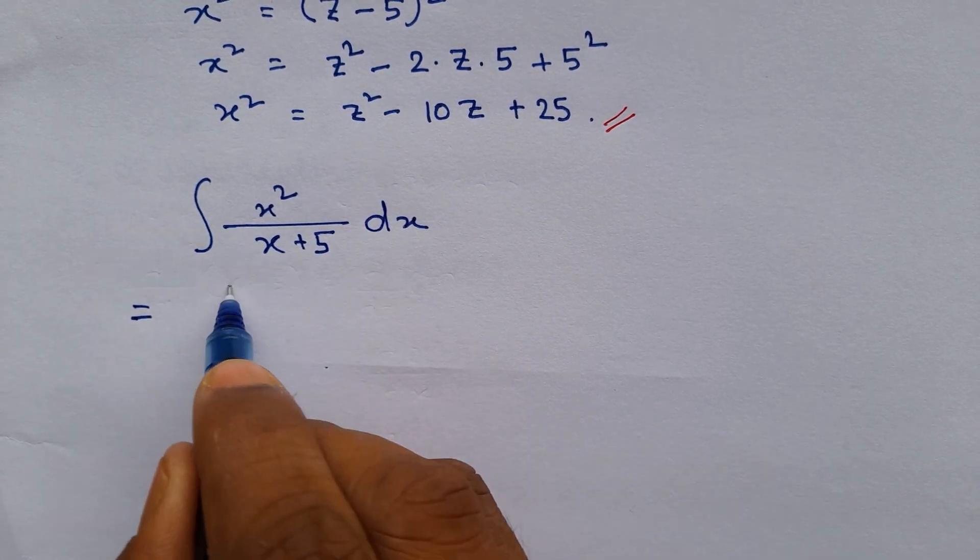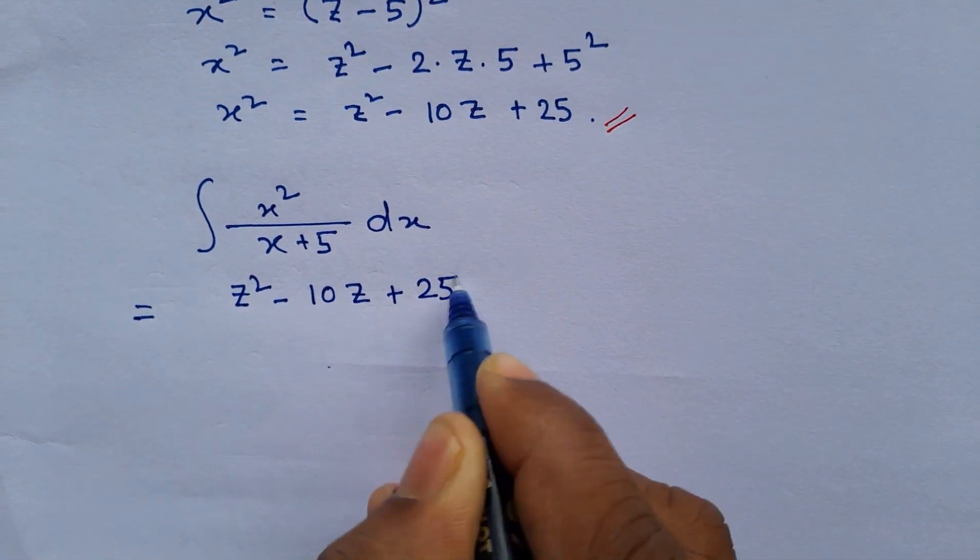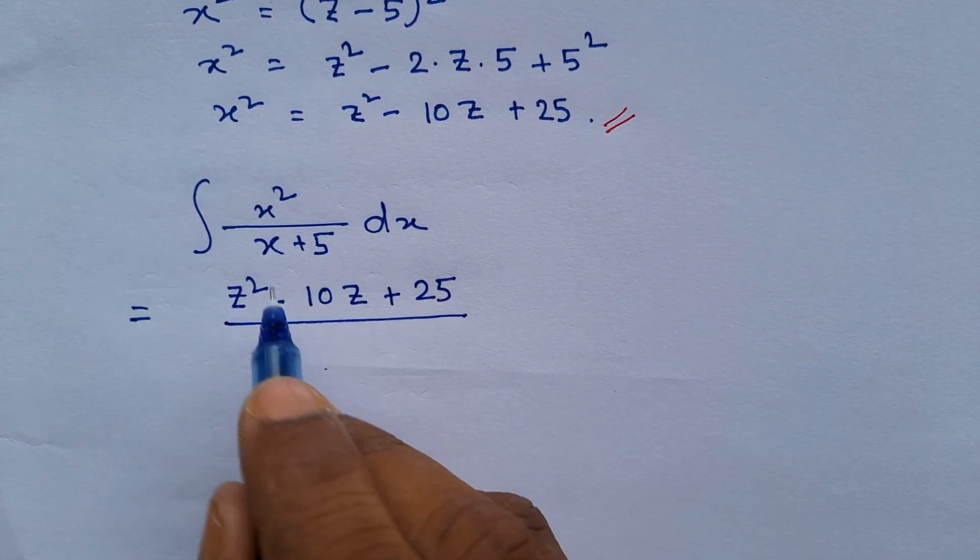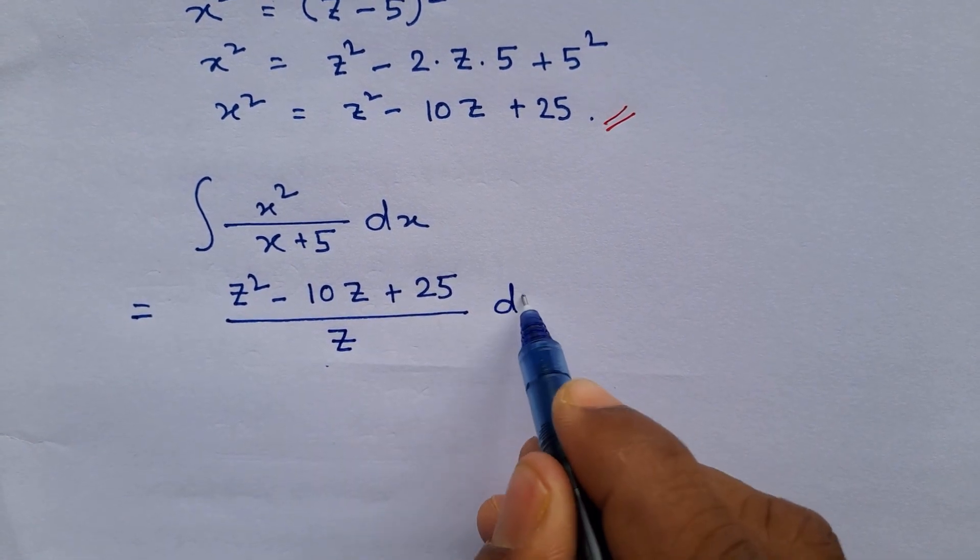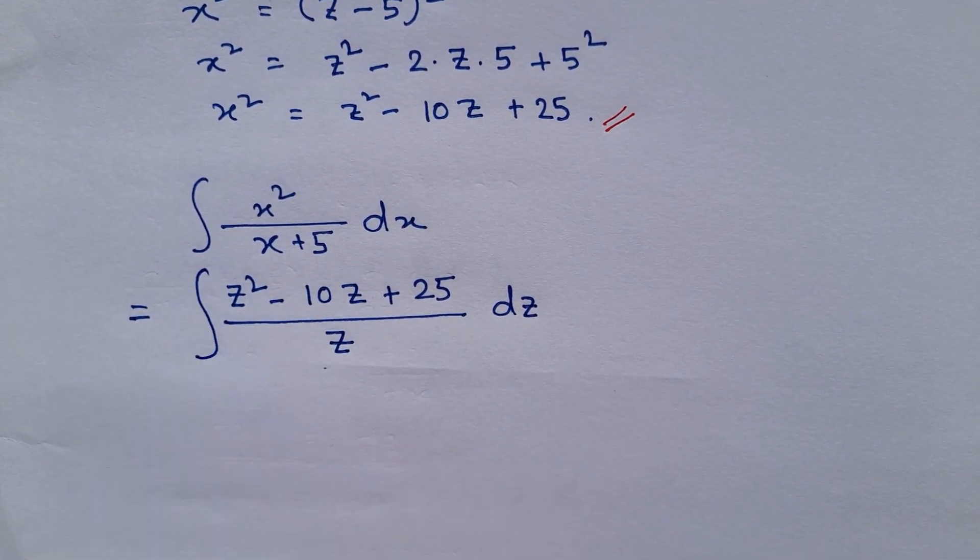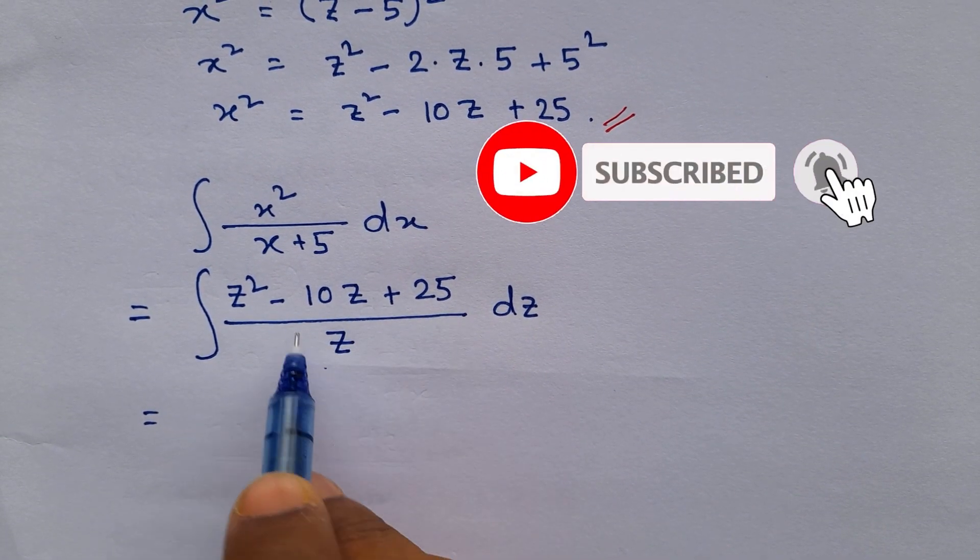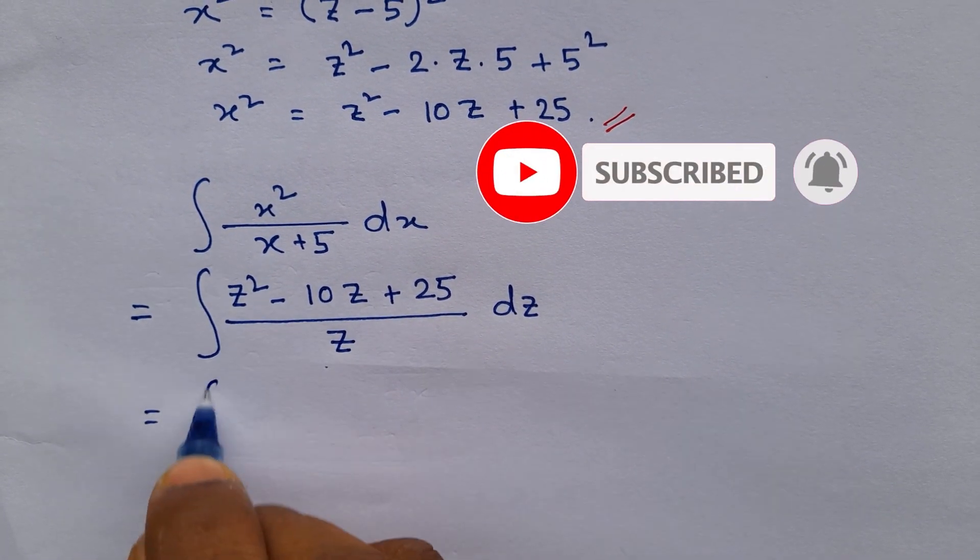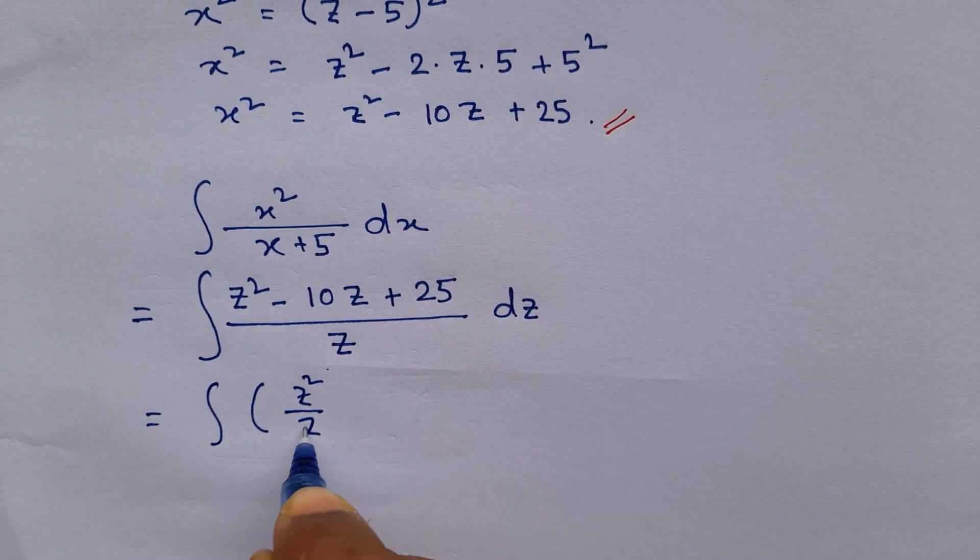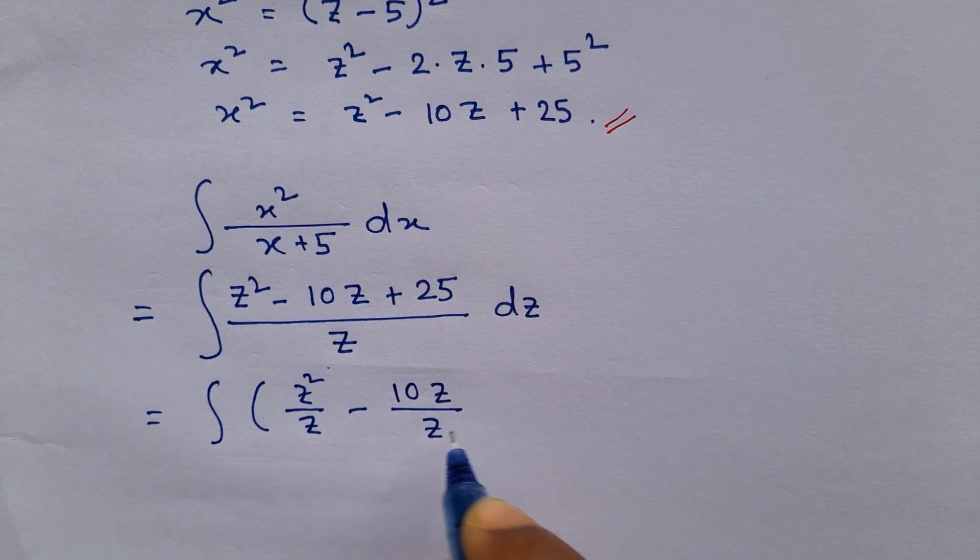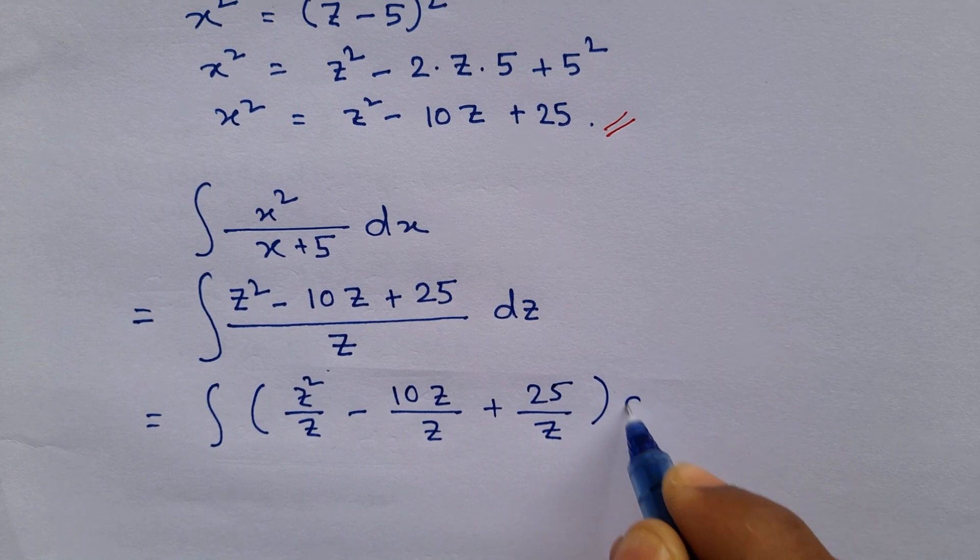x squared we will put as z squared minus 10z plus 25 divided by x plus 5 which we have considered as z, and dx will be dz. Now we will separate each of the terms dividing it with z. So this will become z squared by z minus 10z by z plus 25 by z dz.